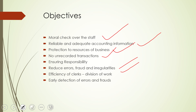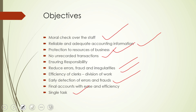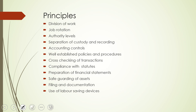We can detect errors or frauds at an early stage. We can also prepare final accounts with ease and efficiency because all transactions are free from errors, fraud, and irregularities, making the final accounts reliable. Since only a single task is allotted to a particular person from beginning to end, this helps attain specialization, and the employee becomes specialized in that work. These are the objectives of the internal check system.